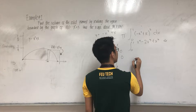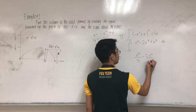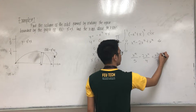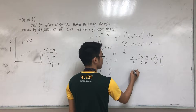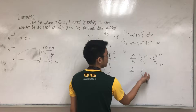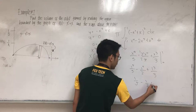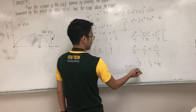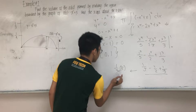Integrating from 0 to 1, squaring the function gives x⁴ - 2x³ + x² dx. Integrating these values, we get x⁵/5 minus 2·(x⁴/4) plus x³/3, evaluated from 0 to 1. Substituting the values, we get 1/5 - 1/2 + 1/3. Computing this gives 1/30, multiplied by pi, giving us a final answer of π/30. That is the total volume obtained for this region.